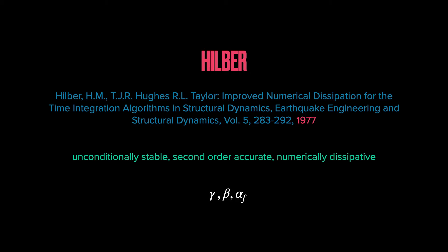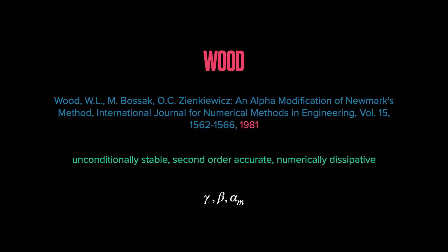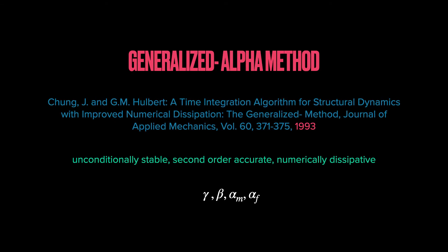In 1977, Hilbert, Hughes, and Taylor improved the Newmark method by introducing a new parameter alpha-f. In 1981, Wood, Bosak, and Zinkevich proposed another modification of the Newmark method by introducing a parameter alpha-m. Finally, in 1993, Chung and Hulbert generalised the work of Newmark, Hilber, and Wood to obtain the generalized alpha method.